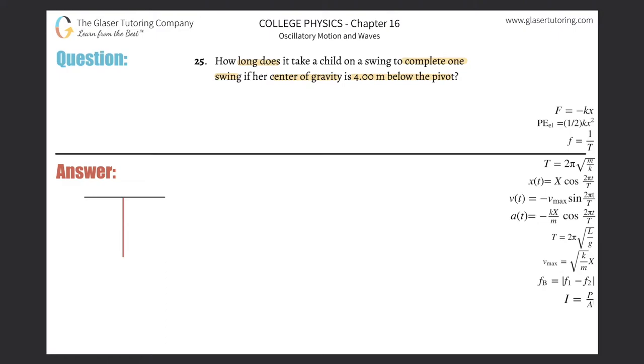What we need to do is basically reword what this problem is telling us. When it says how long does it take the child on a swing to complete one swing, you have to reinterpret that as one of the physics variables over here on the left-hand side in the equations.